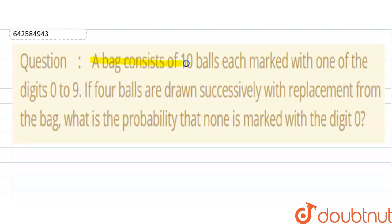A bag consists of 10 balls each marked with one of the digits 0 to 9. If 4 balls are drawn successively with replacement from the bag, what is the probability that none is marked with the digit 0?